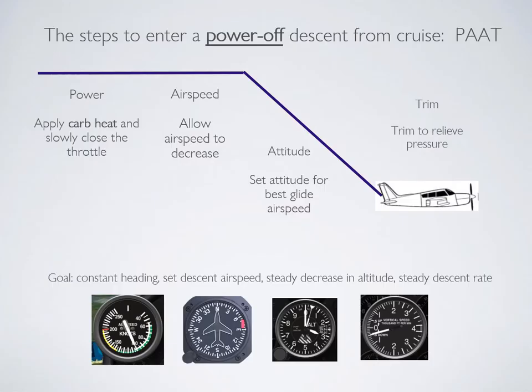The pattern goes like this: carb heat on, power back or throttle fully closed, allow airspeed to decrease, find the appropriate attitude, and then trim to relieve pressure. You should then be in a descent at a controlled airspeed, constant heading, altitude decreasing, and a constant rate on the VSI.